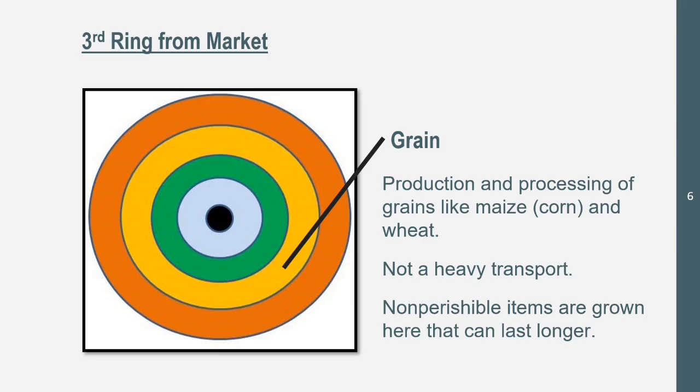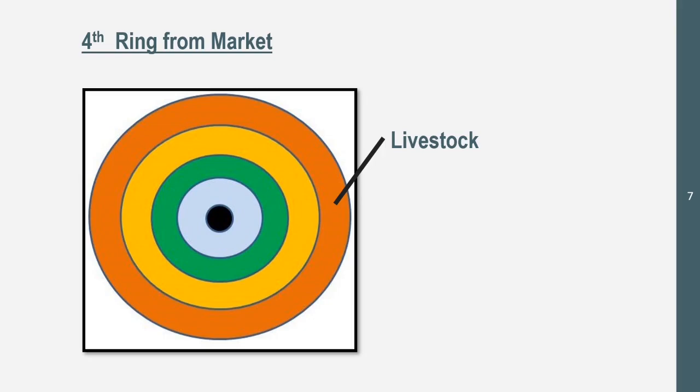Non-perishable items are also grown here that can last a long time. They're not necessarily always grain, but we know corn and wheat are non-perishable. Other non-perishable items are probably going to be grown in this ring as well.